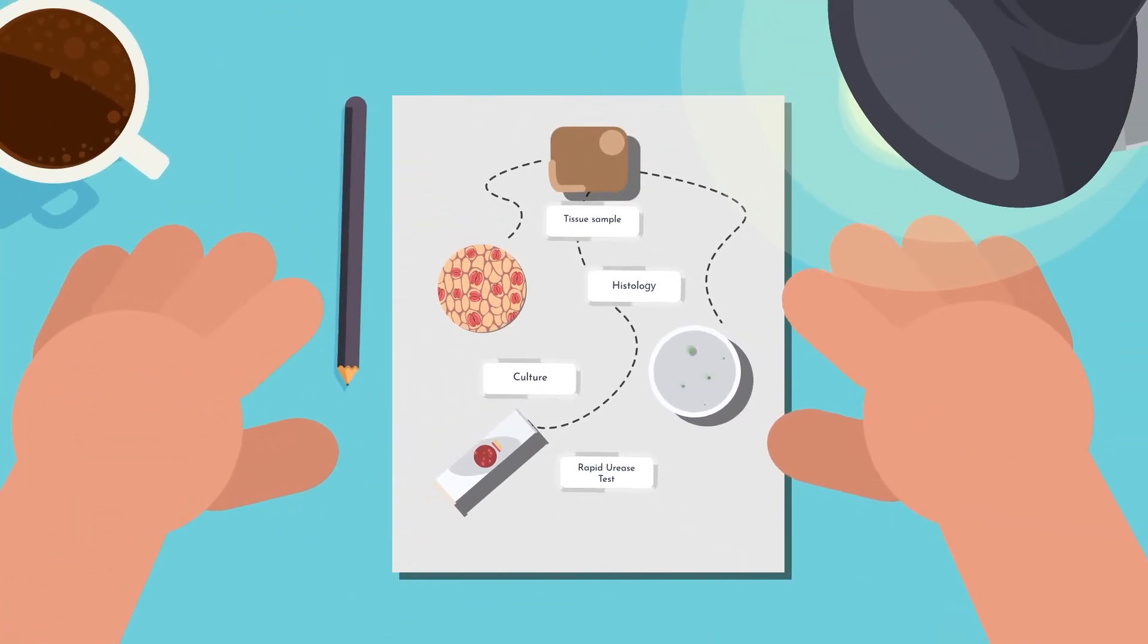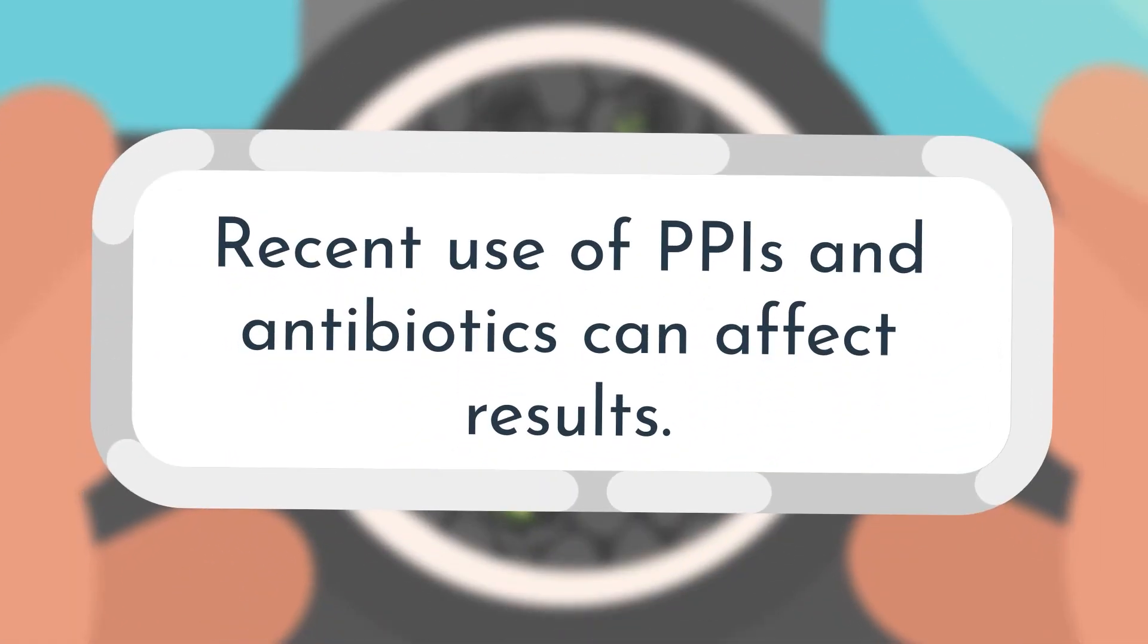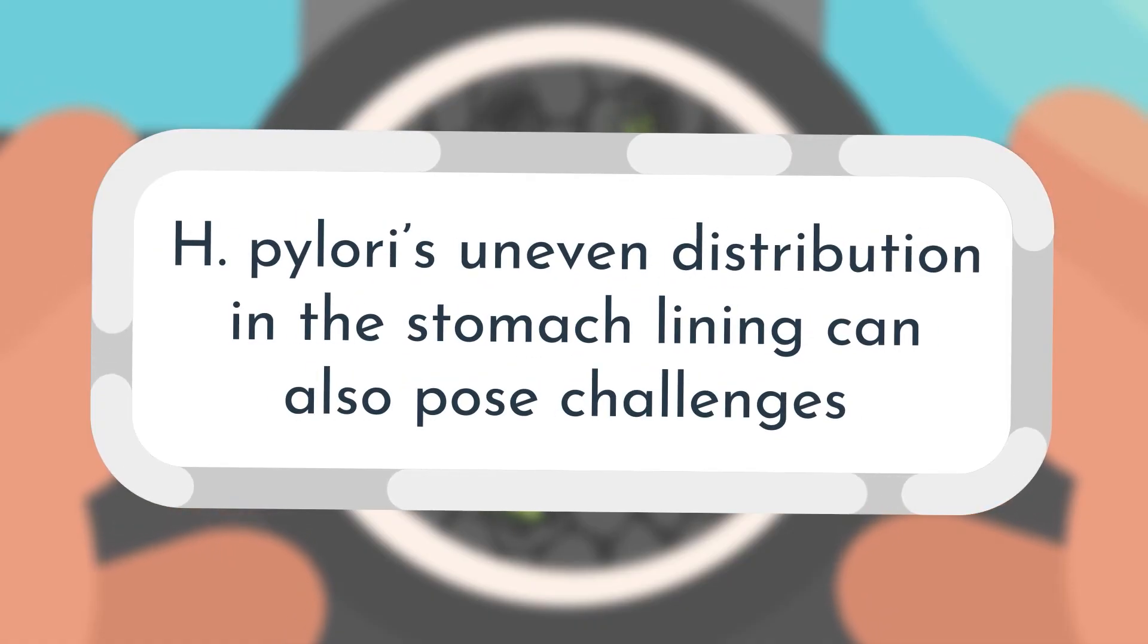Histology is considered the gold standard for direct H. pylori testing. Biopsy samples are stained and examined under a microscope to detect H. pylori cells. However, recent use of PPIs and antibiotics can affect results, and H. pylori's uneven distribution in the stomach lining can also pose challenges.